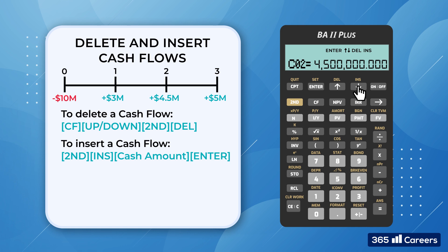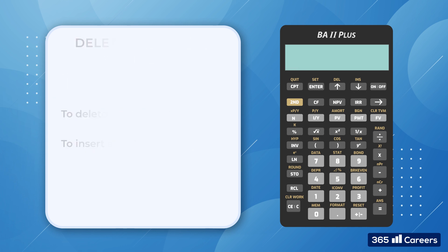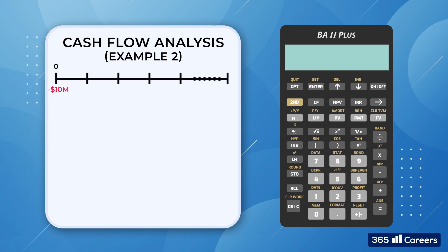Before we wrap up this video, let's examine another case very quickly. Assume that the project generates $2 million per year from year 4 to year 20. What would be the project's NPV? Let's see, since the calculator remembers the previously entered values, all we need to do is locate CO4 and work from there. We press CF and scroll down. Then we input $2 million.